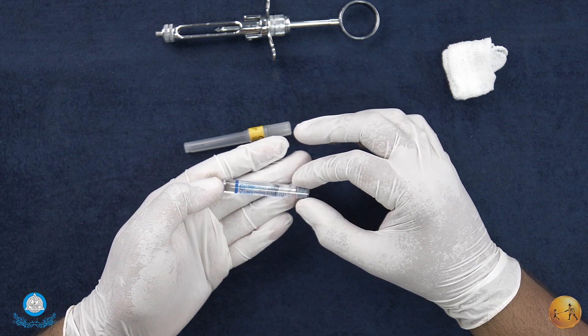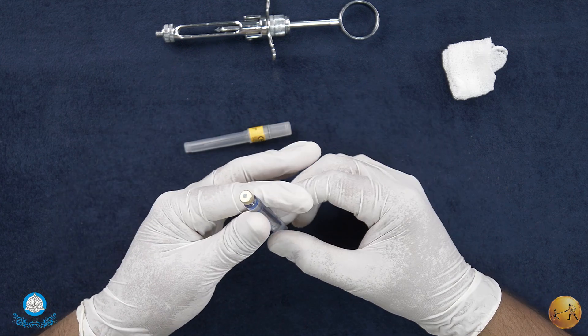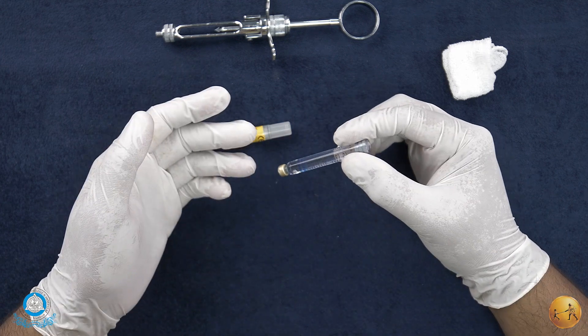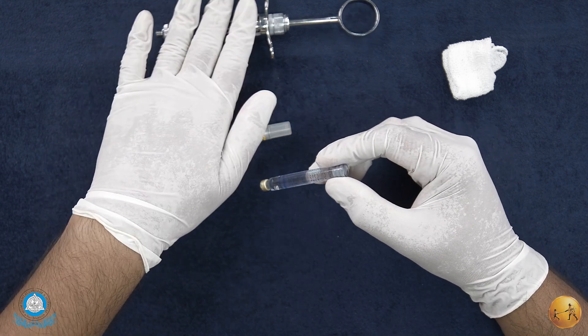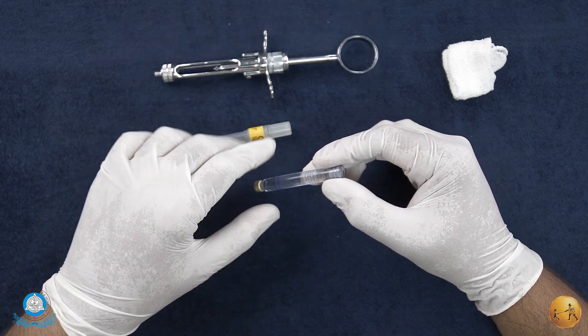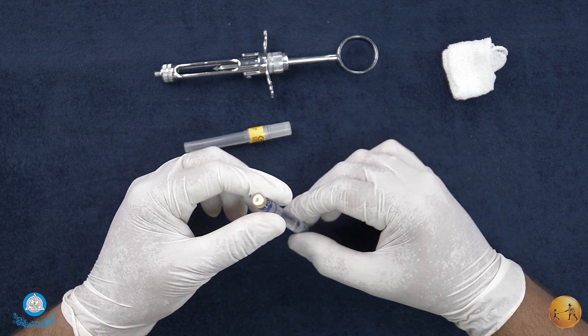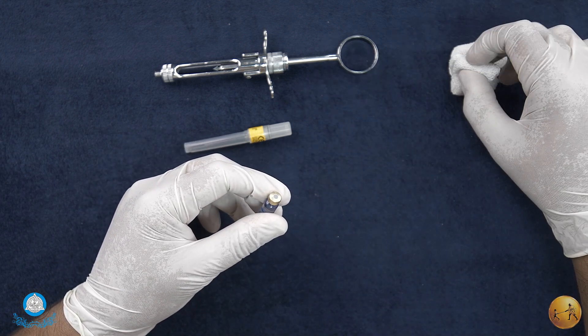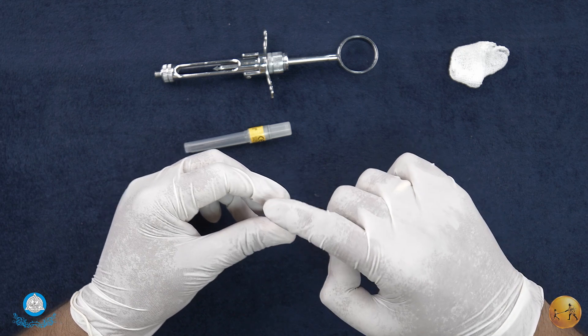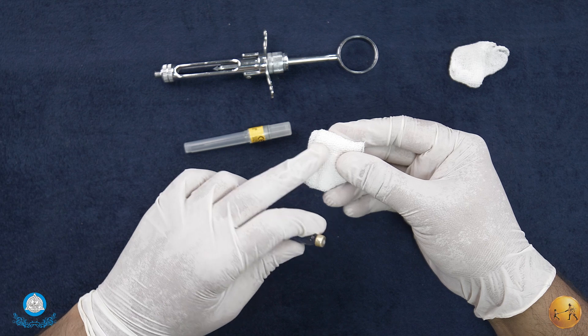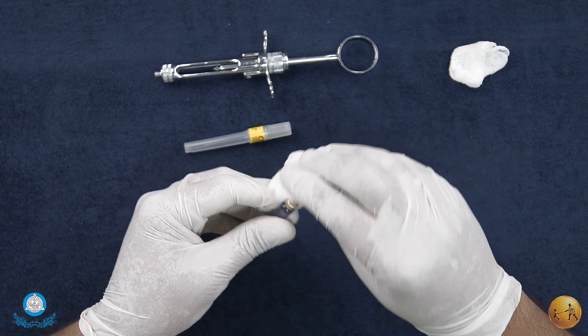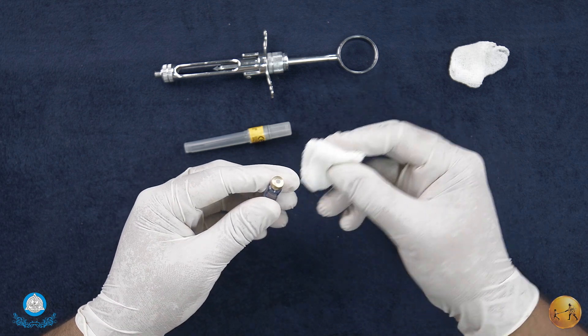A cartridge can normally be used directly from the dispenser to load into the syringe itself. But at times, if the clinician feels like it, the diaphragm - that is the part around the aluminum cap - can be rubbed off using a two by two with either 90% isopropyl or 70% ethyl alcohol.